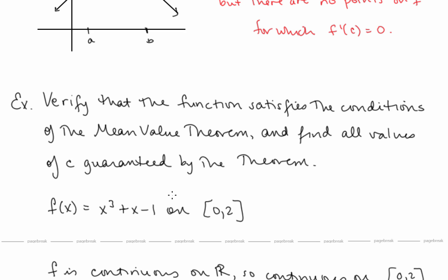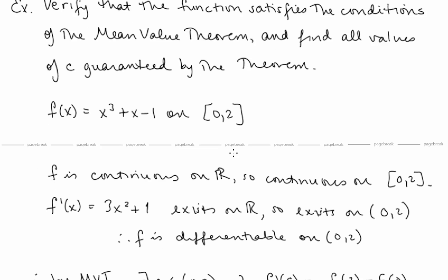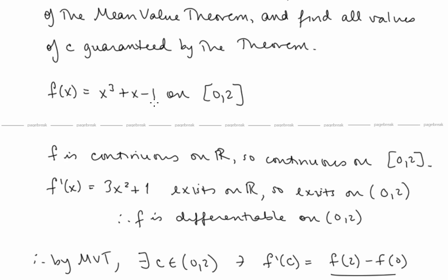Let's take a look at this example: verify that the function satisfies the conditions of the Mean Value Theorem and find all values of c guaranteed by the theorem. The first thing we have to do is show that f is continuous on the closed interval, and then show that f is differentiable on the open interval. We note that f is a polynomial, continuous on the entire real line, so of course it's going to be continuous on the closed interval [0, 2].